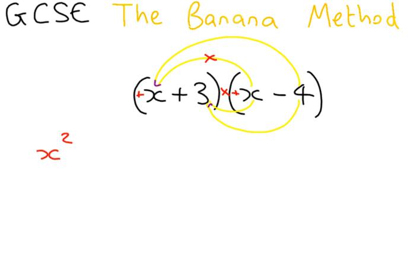x times minus 4 is the next one. But I want us to just think of x times 4, which is 4x, and then look at the signs. A plus times a minus is a minus, so it's minus 4x.